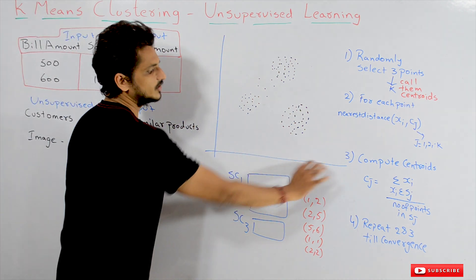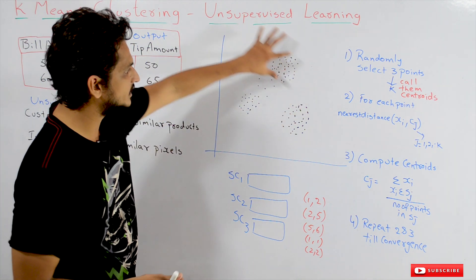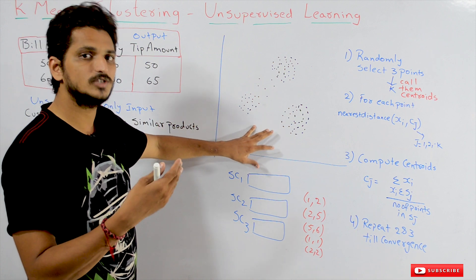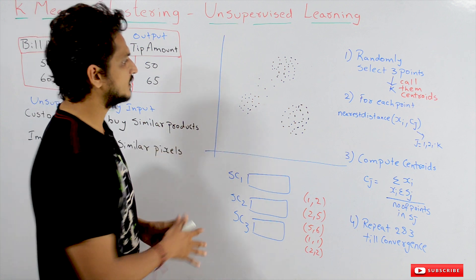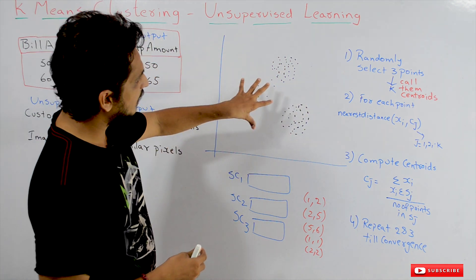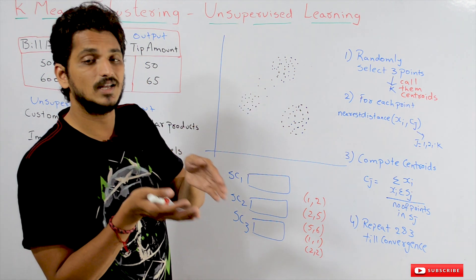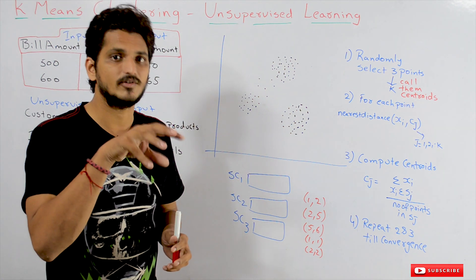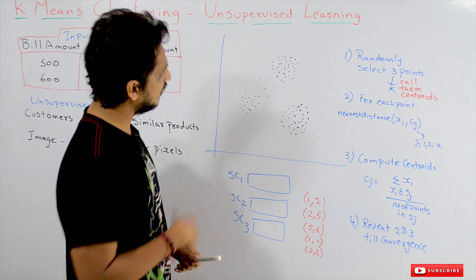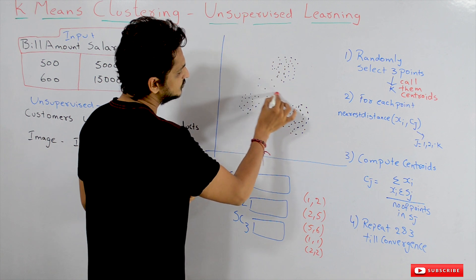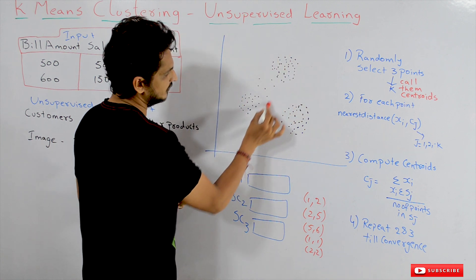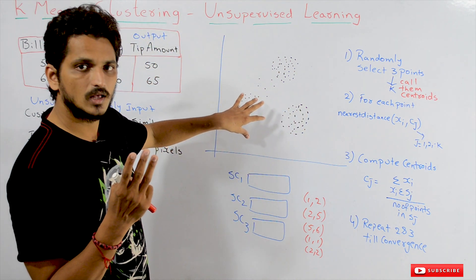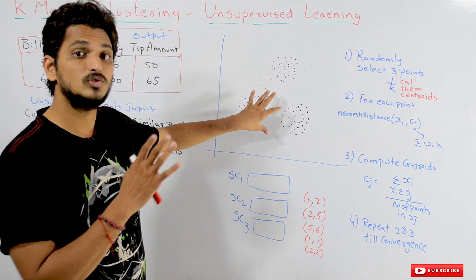This is our dataset in a two-dimensional coordinate system with data points plotted on it. Our assumption is that you are following from the beginning and already know how to plot these points. The main goal of K-means clustering is to identify similar clusters — a cluster being a group of points. By looking at this dataset, we can observe that some points form one cluster, others form another, and others a third. So three clusters can be identified, though usually we cannot visualize the data.